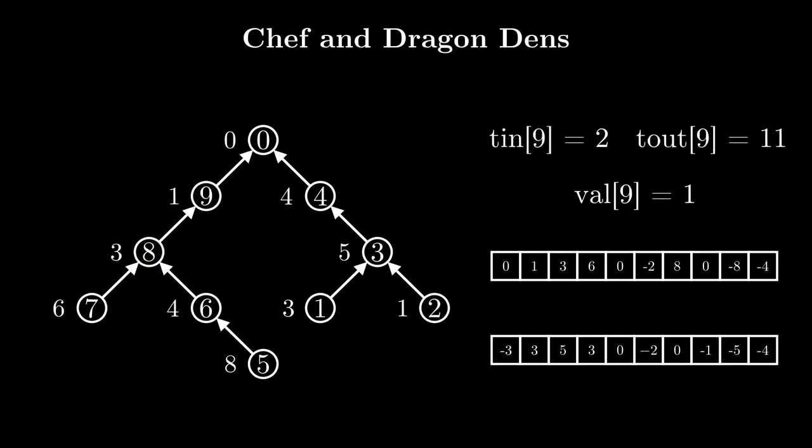It's easy to see that no node which hasn't been visited yet will have its value included in this path. Furthermore, nodes that have been visited but aren't ancestors of i will already have been exited — their value will have been subtracted to cancel out the addition when we entered that node. On the other hand, ancestors of i have already been visited, so their values are added, but since node i is still in all of its ancestors' subtrees, their values haven't been subtracted yet.